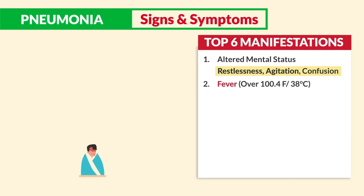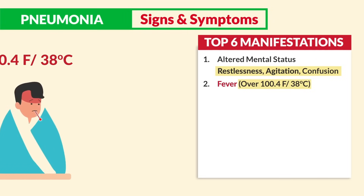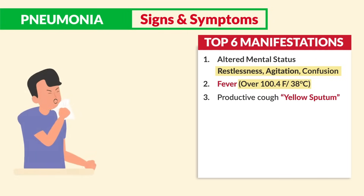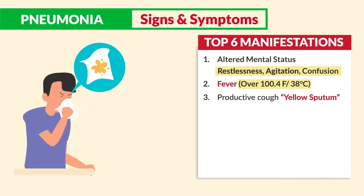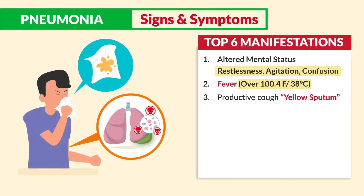Number two is fever — key term: over 100.4°F or 38°C — always an NCLEX favorite. Number three is a productive cough with yellow sputum from that infection.